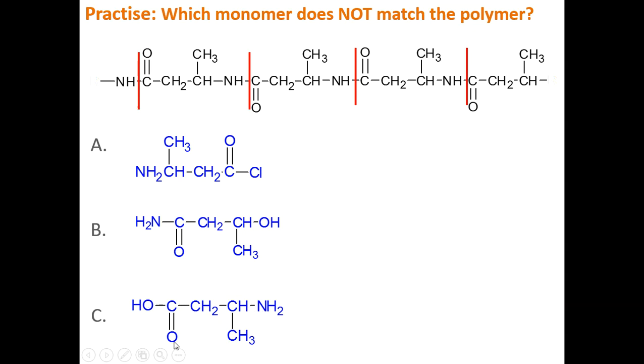But let's check about C. Look, starting at the carbonyl, one, two, three. On the third carbon, I've got a methyl and an N. So I've got a carboxylic acid on this side. I can use this one as well to make that polymer. So B is the right answer, as in you can't use this monomer, B, to make the polymer.